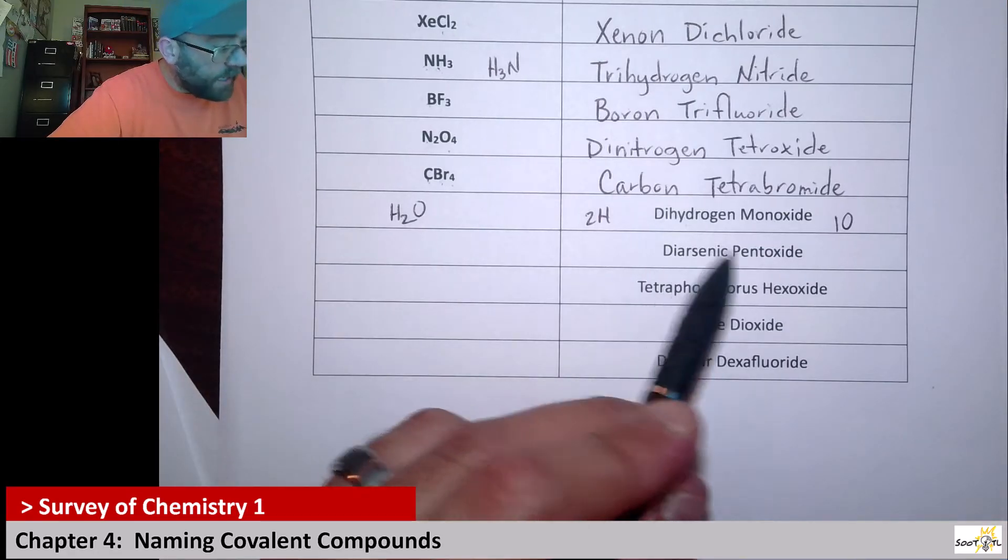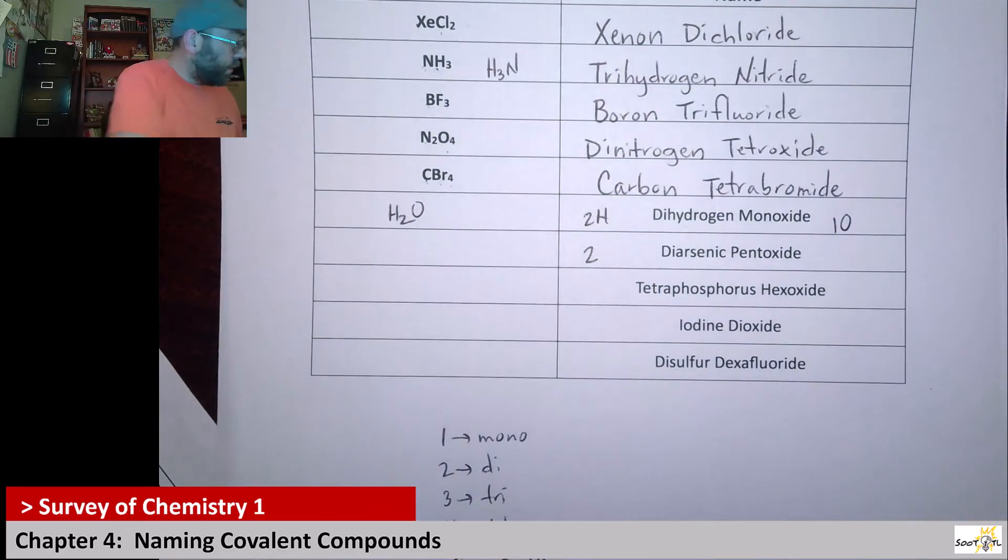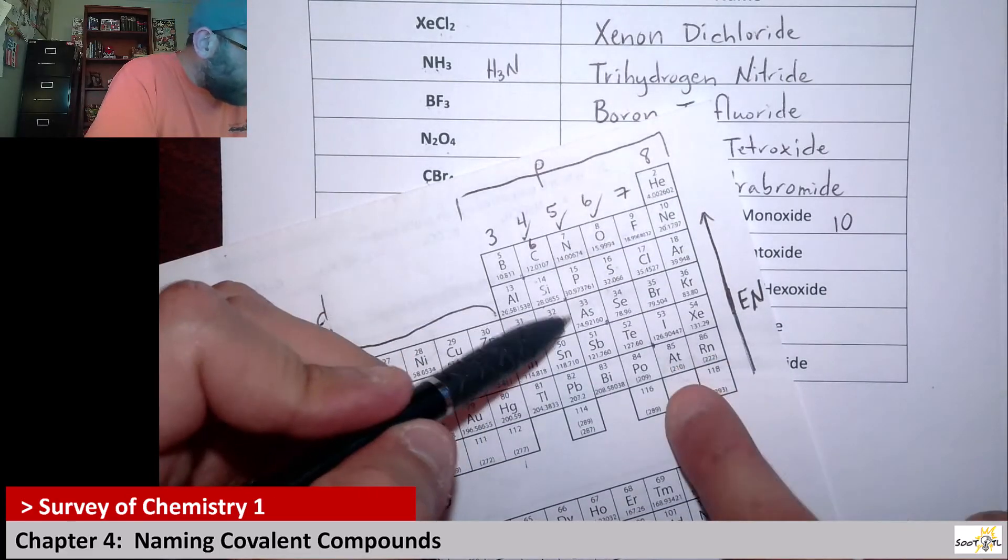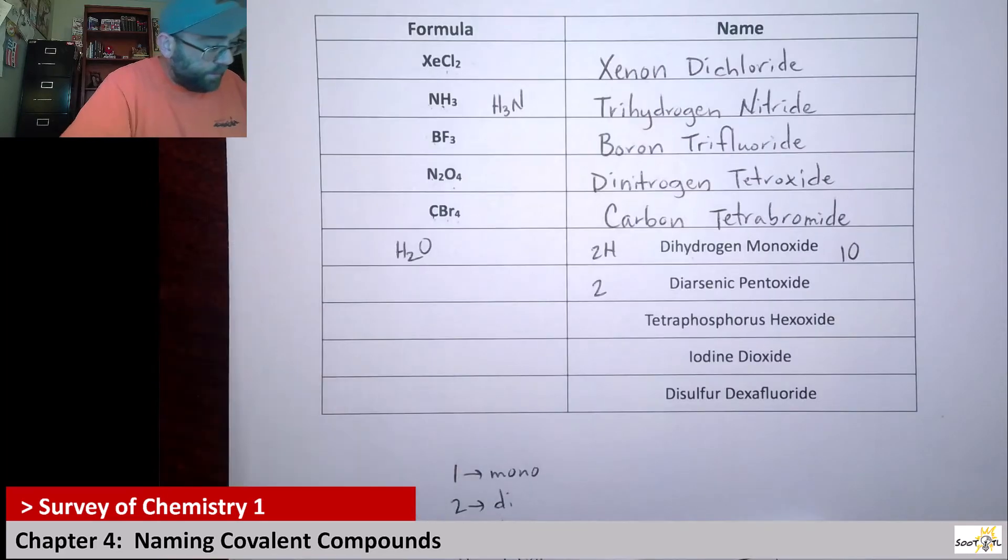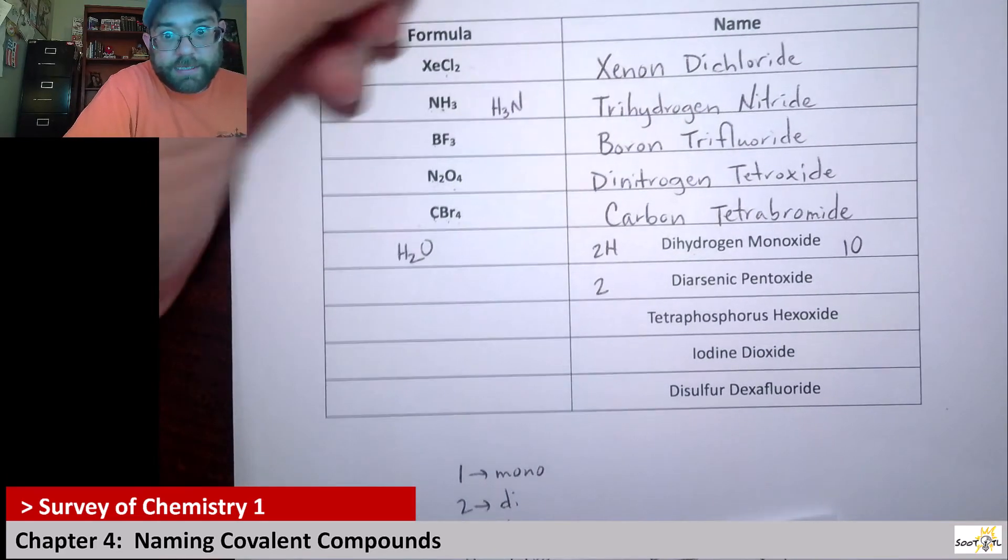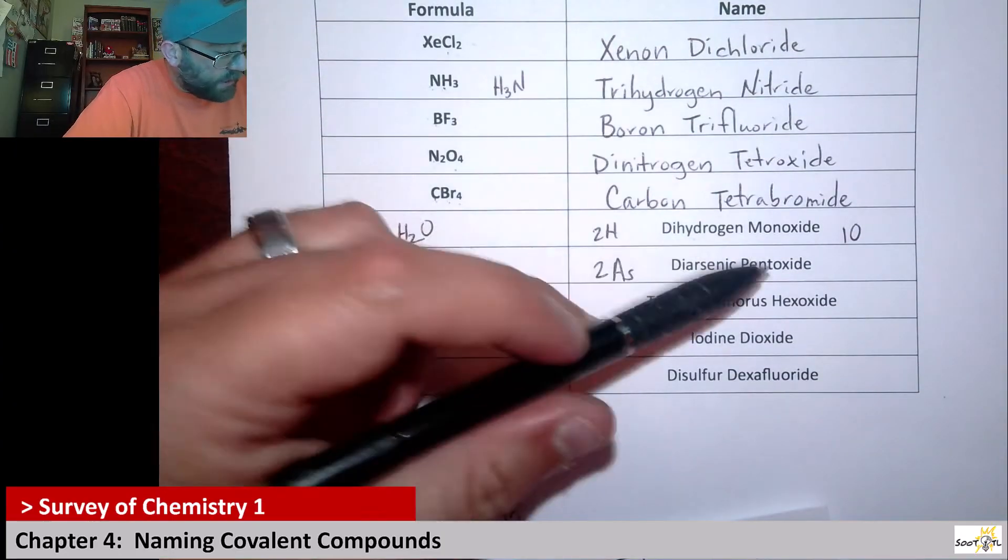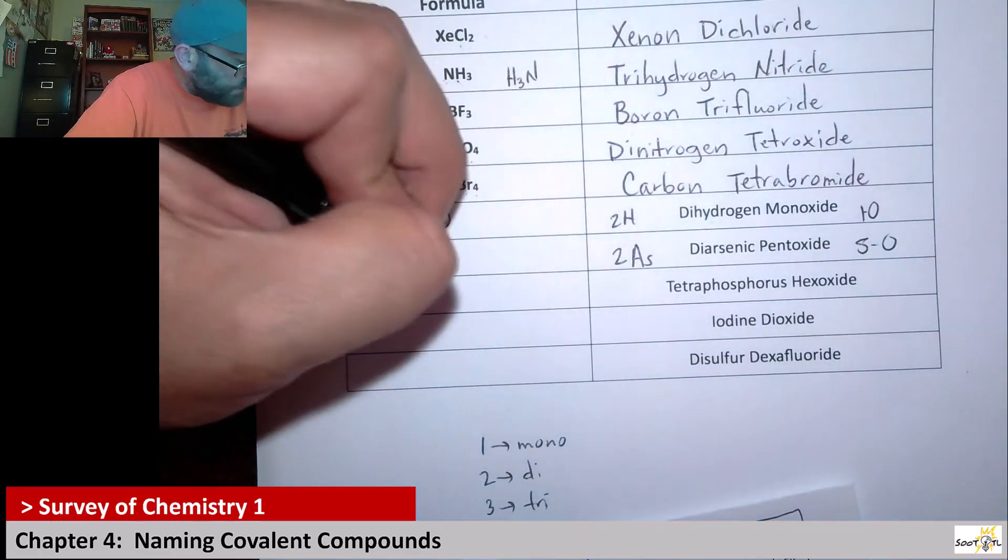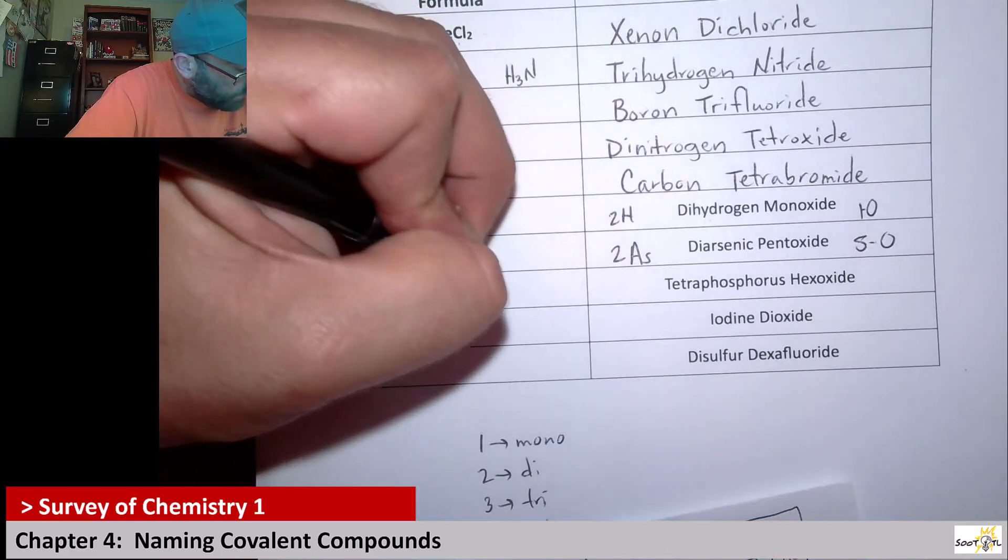Alright. Next we have diarsenic pentoxide. So this is two arsenics. Alright. And so hang on, just to make sure I don't get them confused. I always have to go and look. Okay. It's AS. Okay. Arsenic is AS. If I can look at the periodic table, I can tell you what the symbol is. Alright. So there's the diarsenic, and then you have pentoxide. So that would be there's five oxygens. So it should be As2O5.